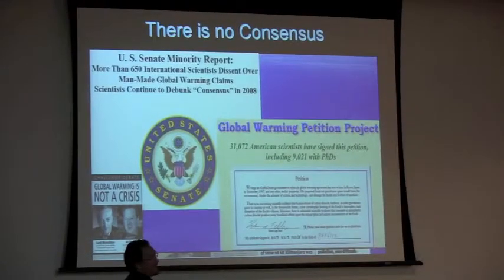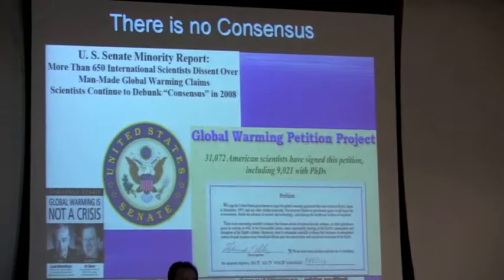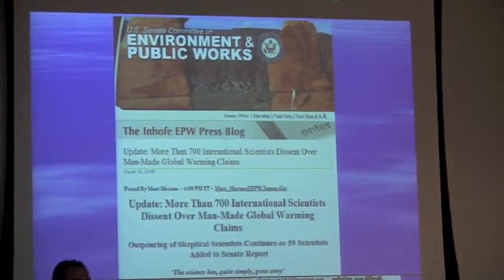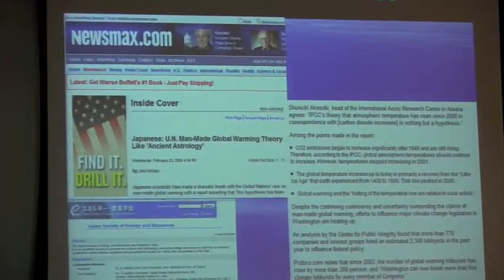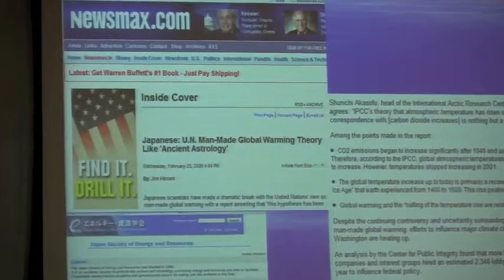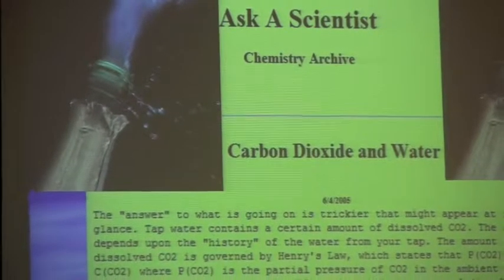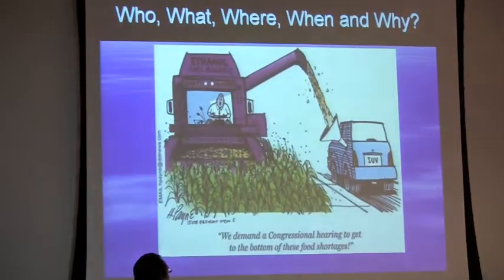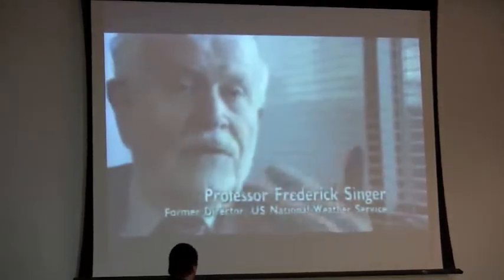There's always talk of a scientific consensus, but there is no consensus. The U.S. Senate Minority Report tracks 658 international scientists who dissent. The Petition Project has 31,000 scientists. They're offering Al Gore $100,000 to debate this in public — he won't take it. Japan's Society of Energy and Resources calls mainstream global warming theories 'like ancient astrology.' Going back to Henry's Law — take a look in your chemistry book. The oceans are like the lungs of the Earth: warm them and they release CO2. Temperature drives CO2, not the other way around.